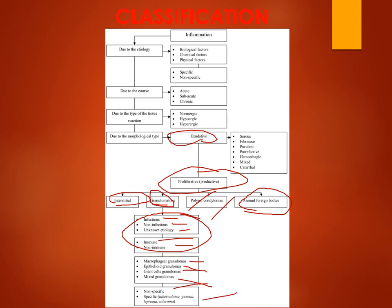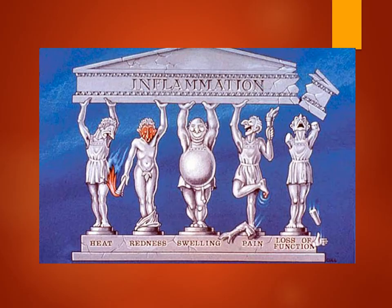Based on macrophagial granuloma we have epithelioid granuloma, and various specific types — you will know these from your previous subjects like microbiology and immunology. Now, the five signs of inflammation: heat, redness, swelling, pain, and loss of function. You must remember the Latin terms: calor, rubor, tumor, dolor, and loss of function.